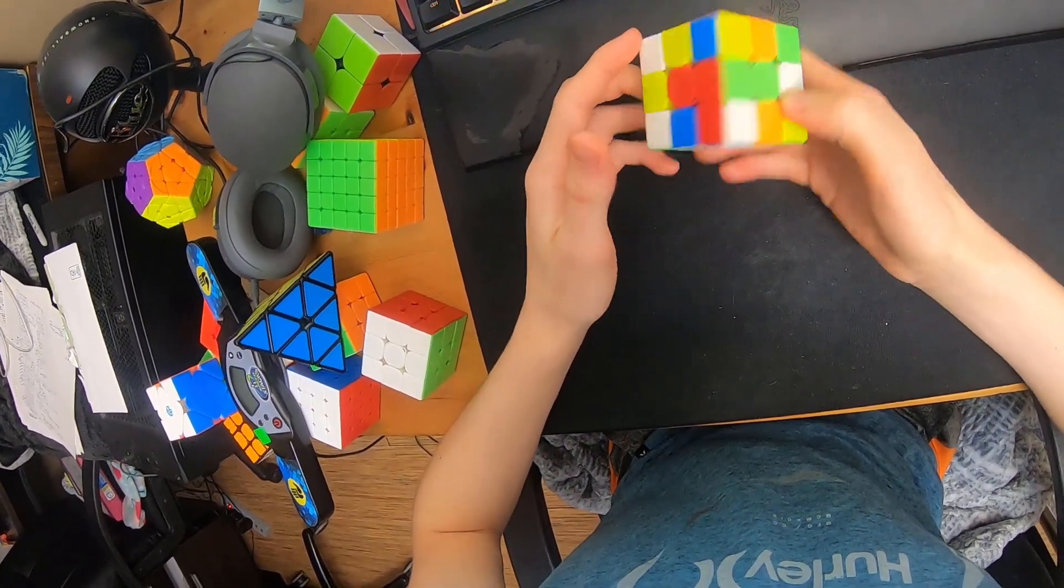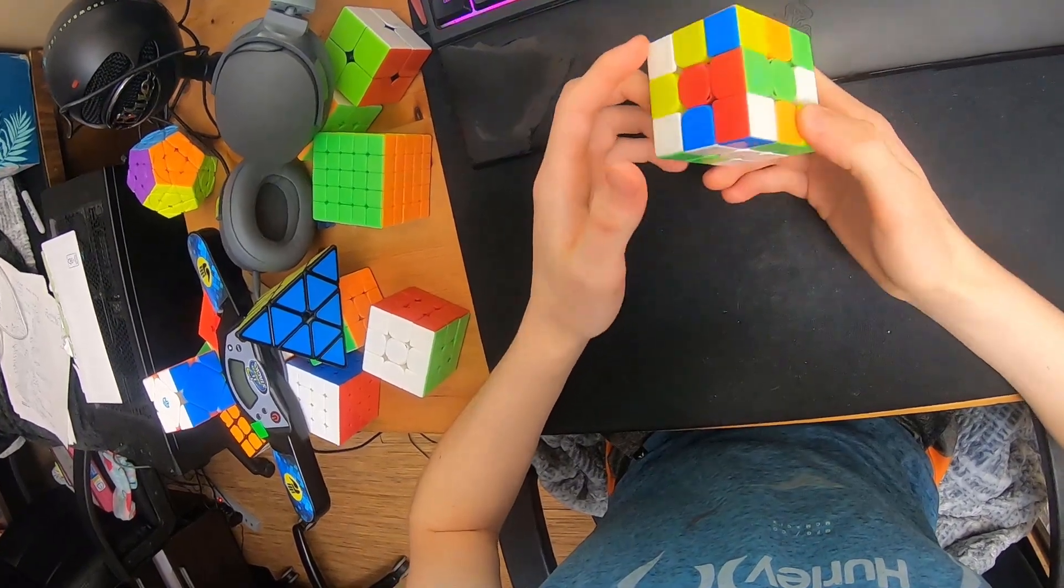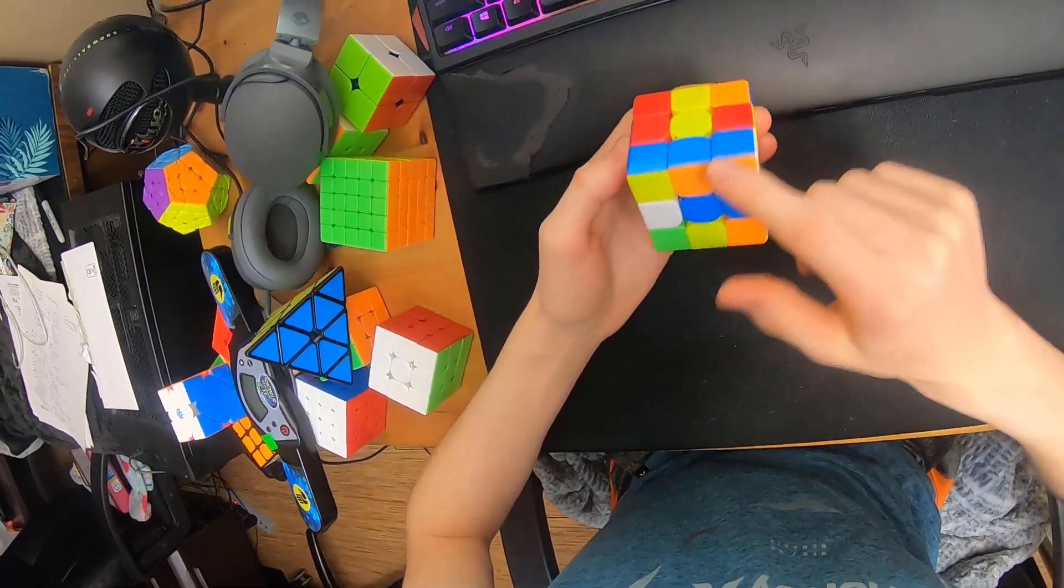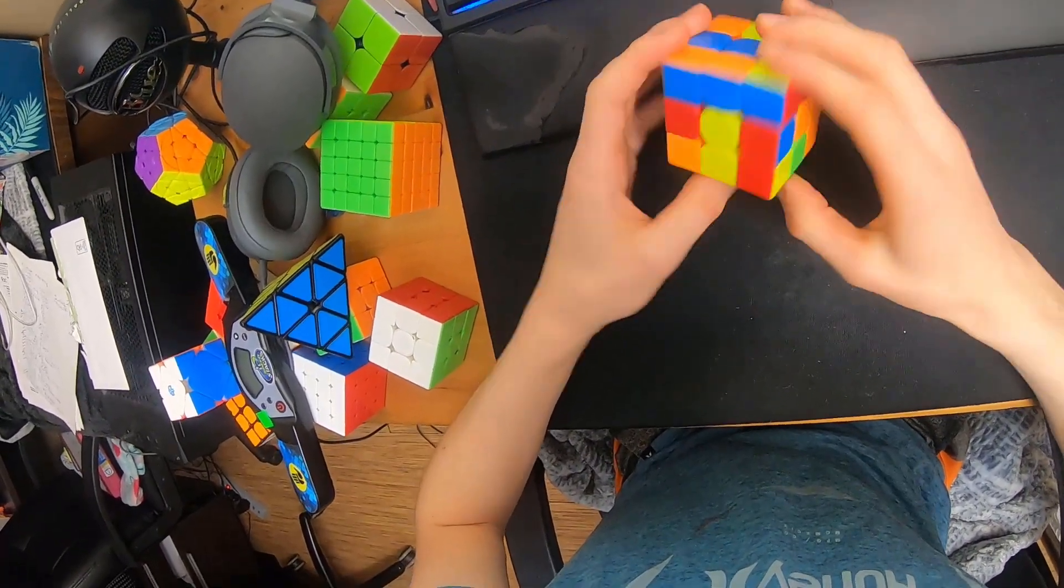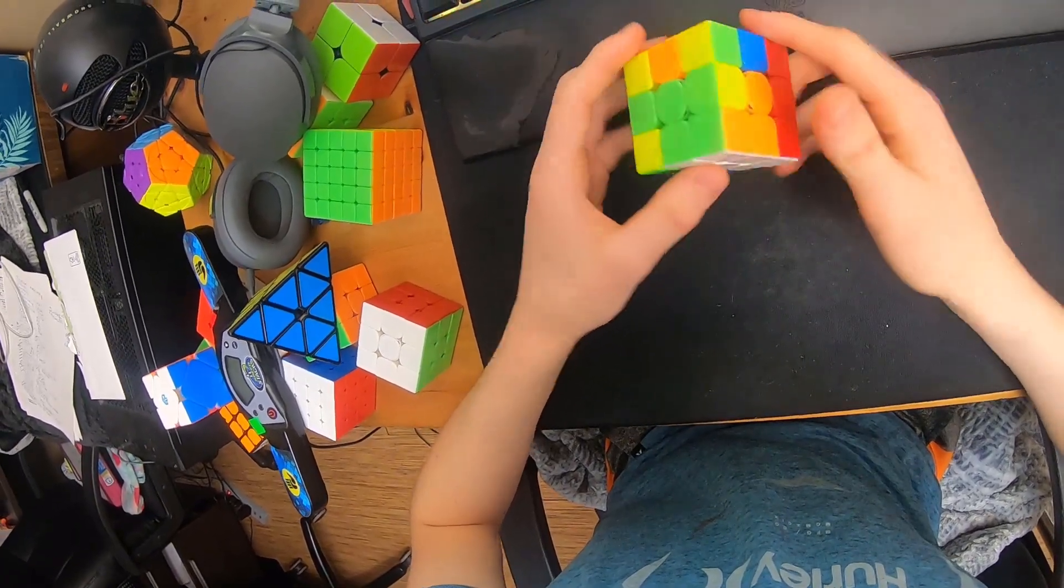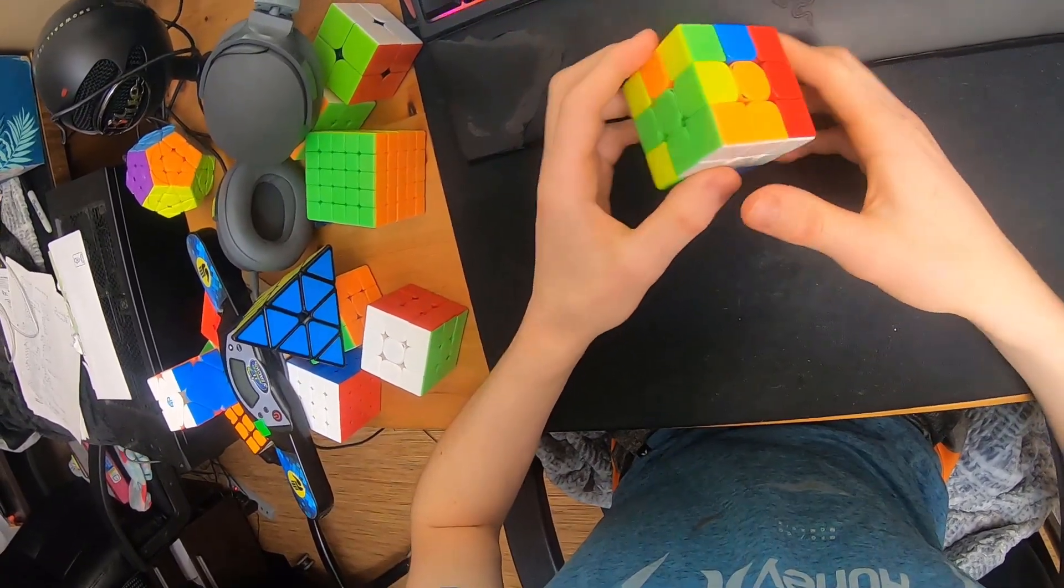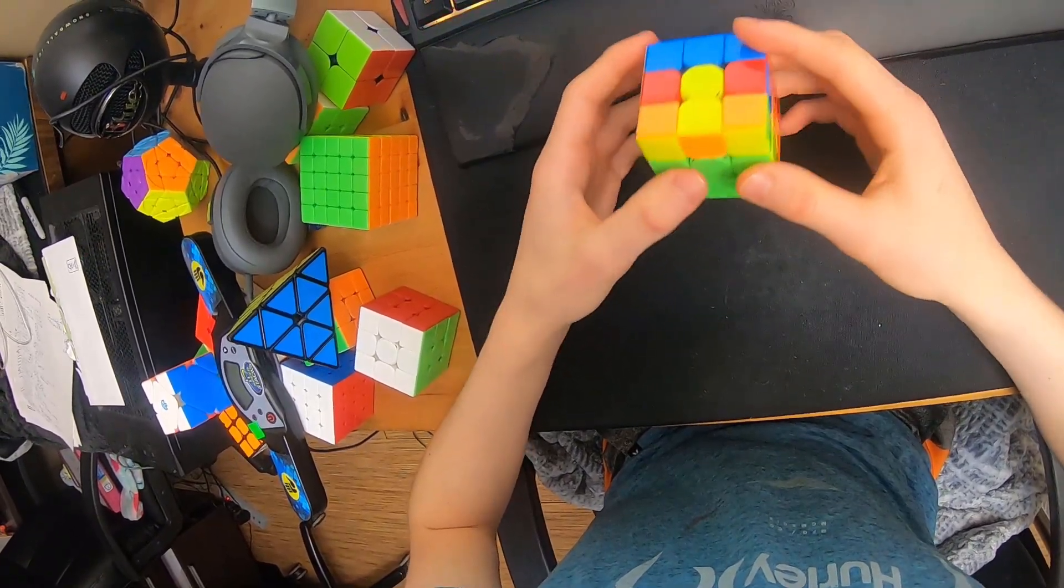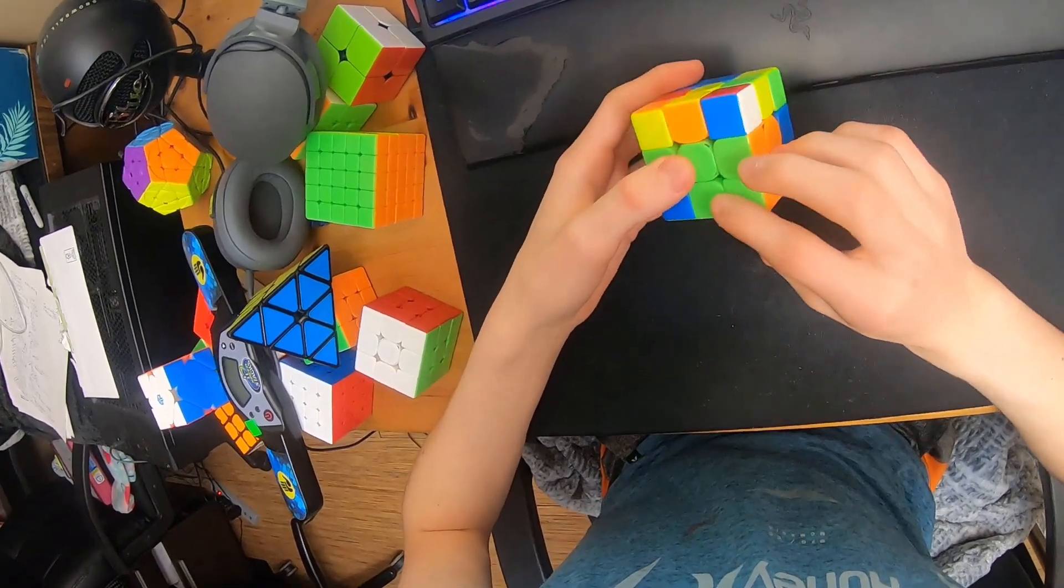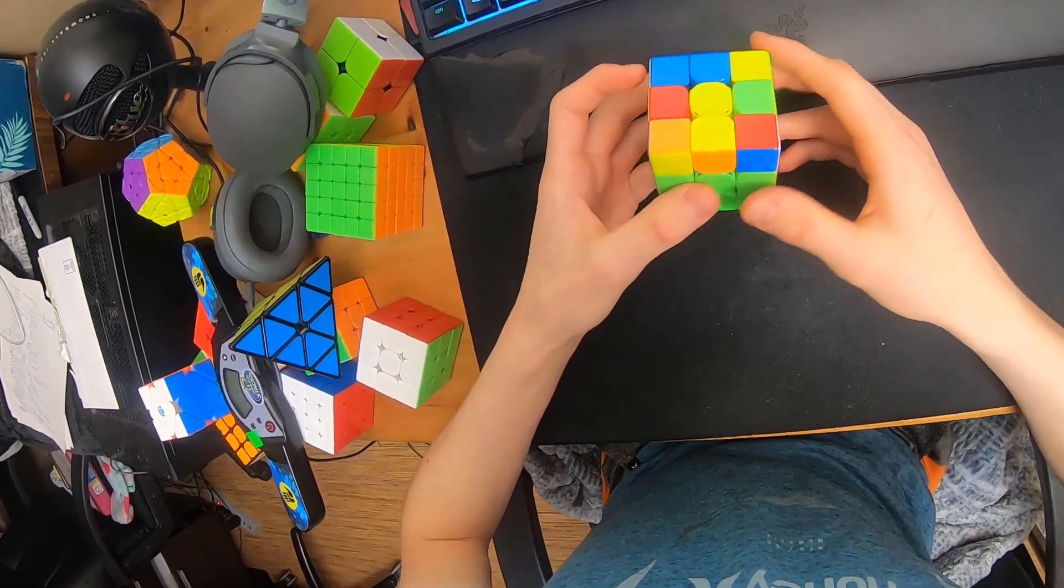Okay, there's a nice x-cross solution with this edge and this corner in the back, and also this isn't going to be disturbed, so it's a very quick start. So if I do r-prime, d-prime, r, I have my 3 cross edges in, and then this corner, so I can also just do d2, r, and then this solves this, and then d2, easy x-cross with just r and d moves.